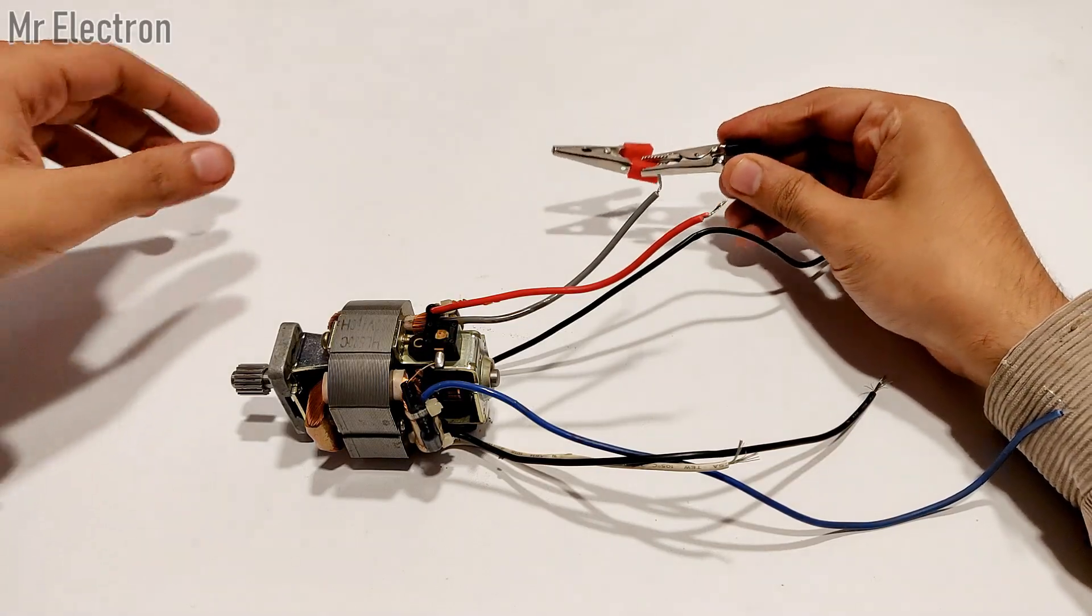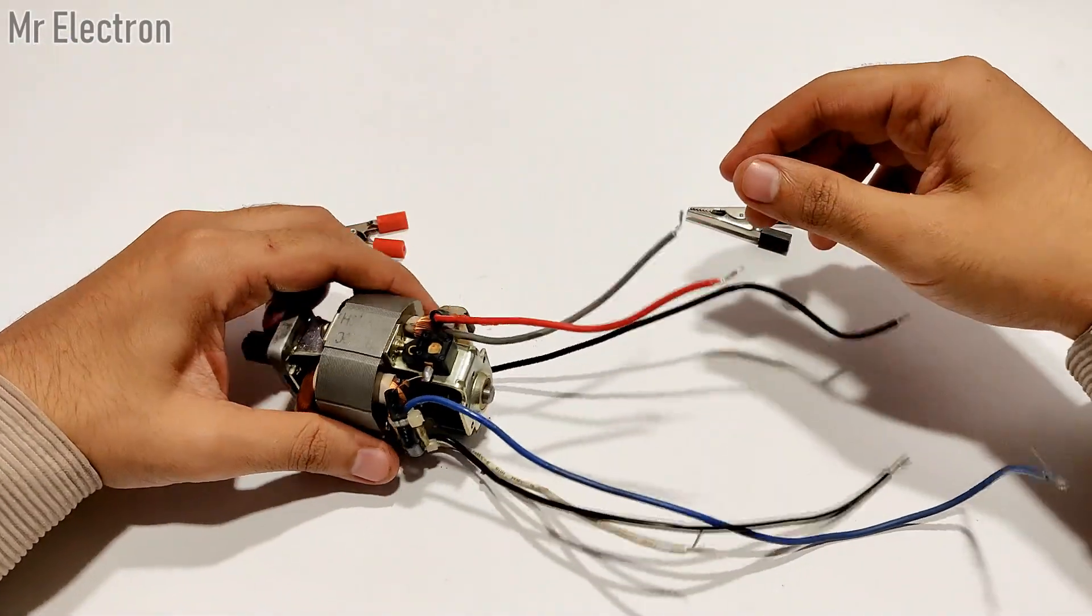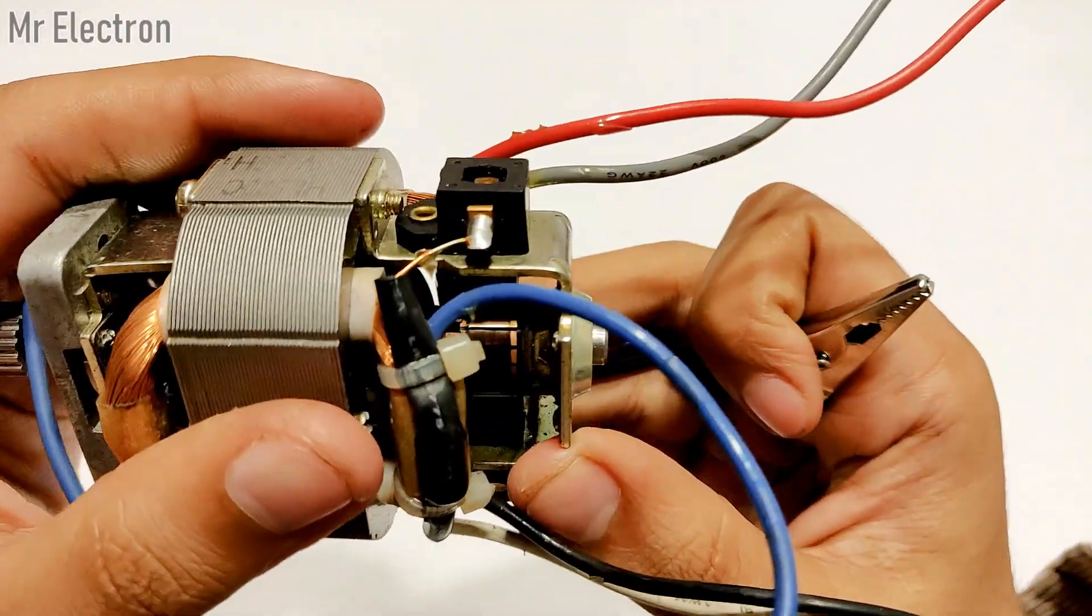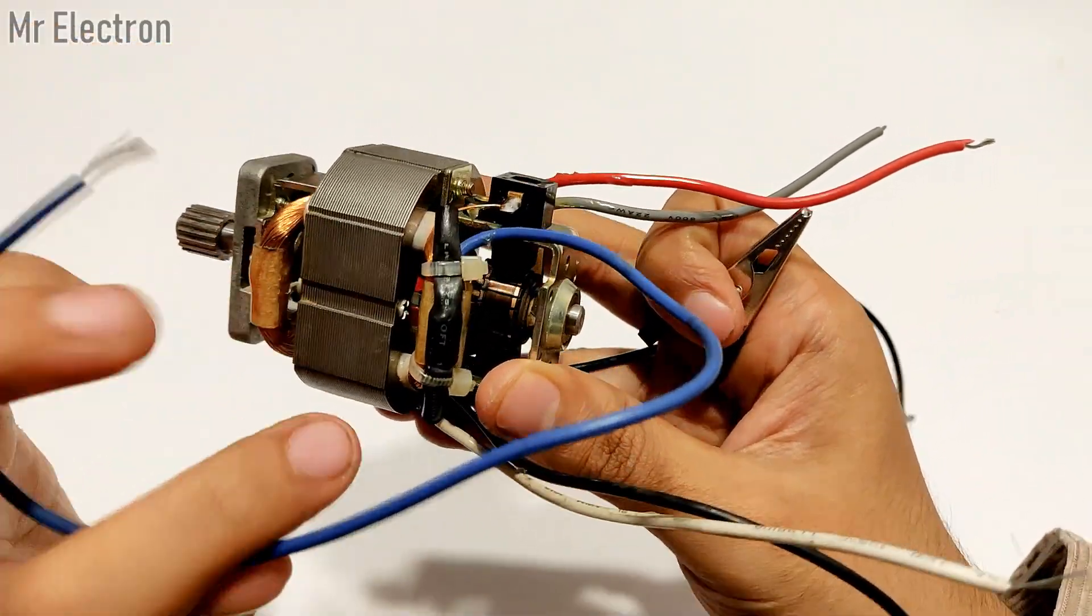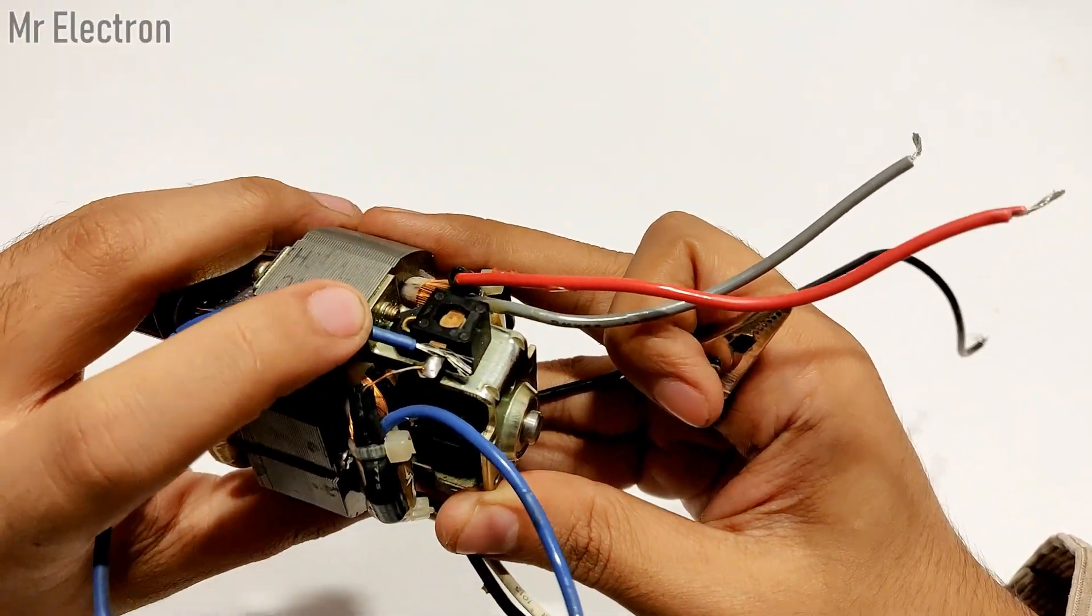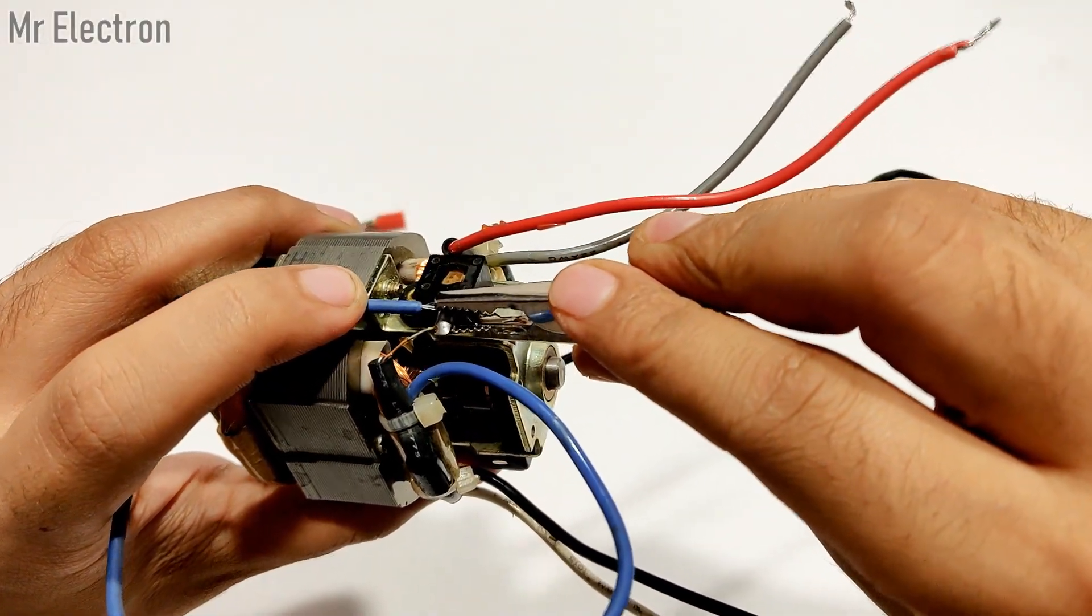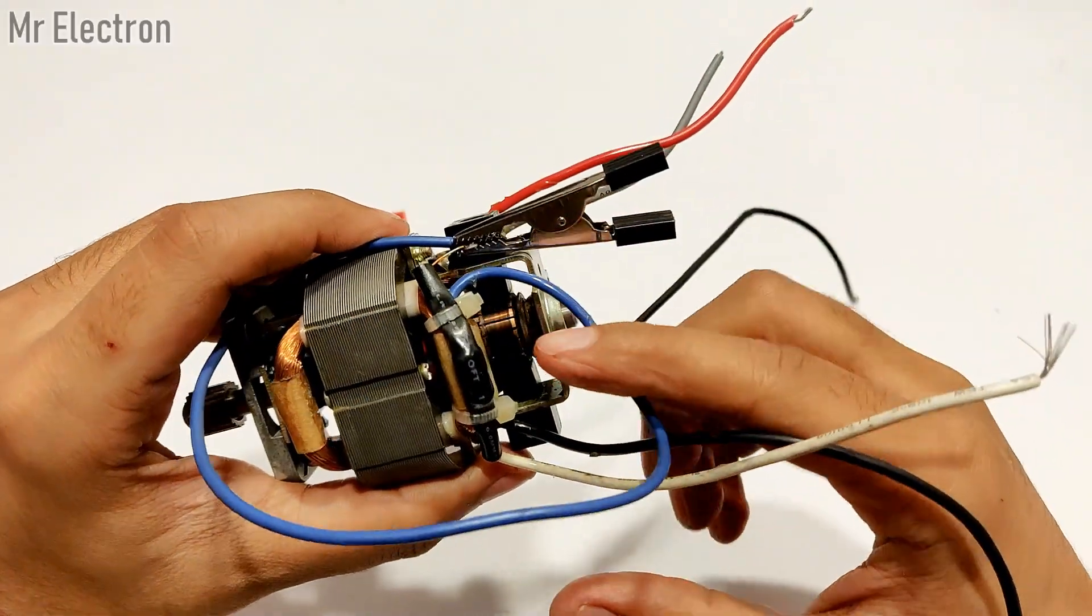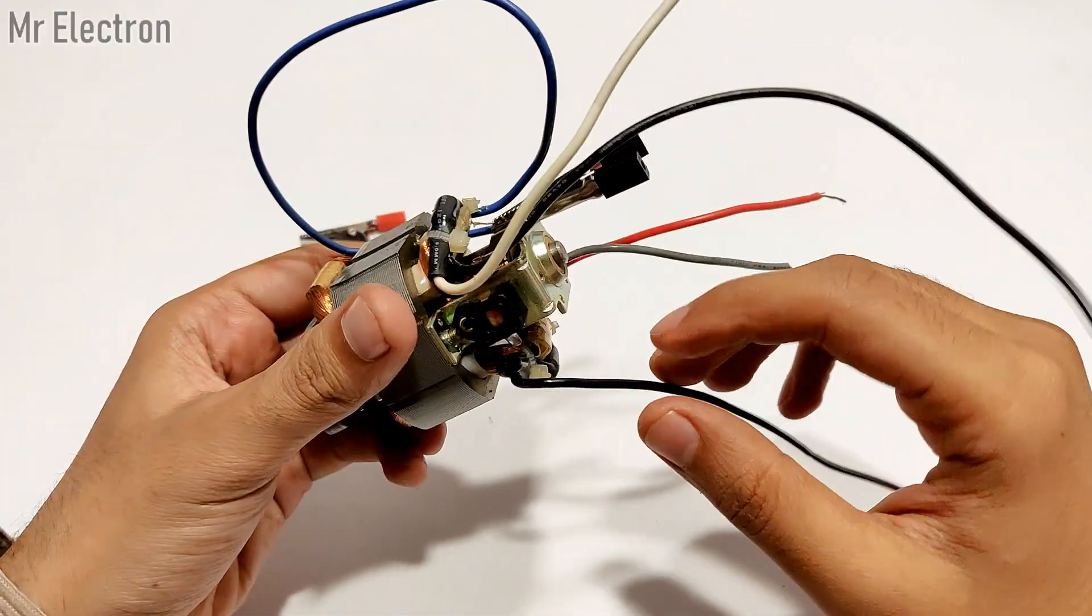We are going to need these two clips since we are testing it at present. This blue wire is from the field of this side. I will connect it to the brush here and keep it held with the help of a crocodile clip. Make sure it is not in contact with the case.